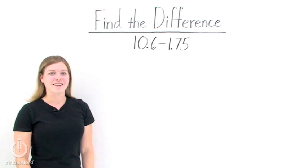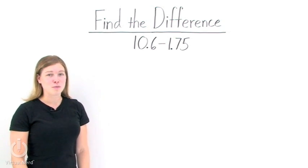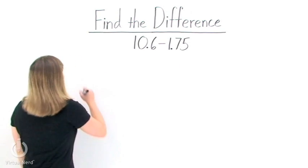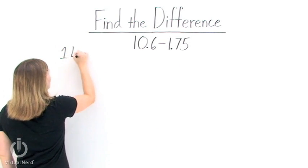Let's find the difference between 10.6 and 1.75. The difference between this subtraction and a normal subtraction is that we have decimal points in both of our numbers. So we need to make sure to account for those when we subtract.